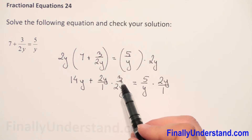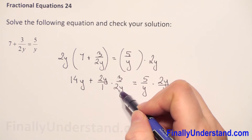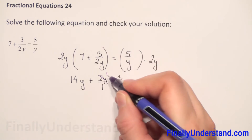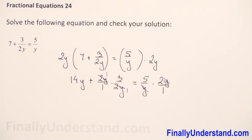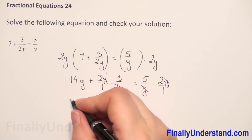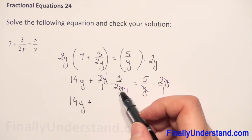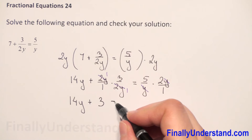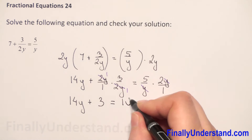How do we do this? We multiply numerator times numerator, but first we have to check if we can reduce something. We have 2y and 2y — they can cancel out. And y with y can cancel as well. So now we have 14y, plus 1 times 3 is 3 over 1, which is still 3. This is equal to 5 times 2 is 10 over 1, which is 10.